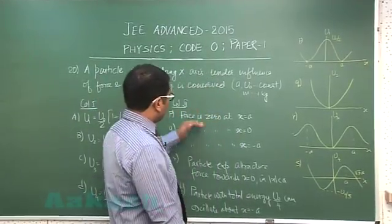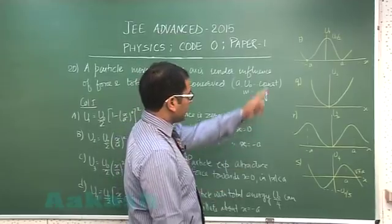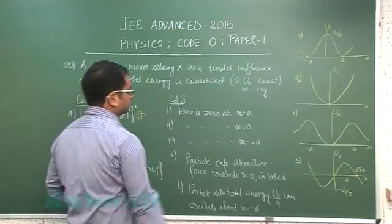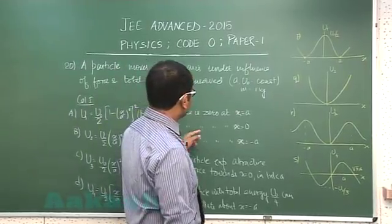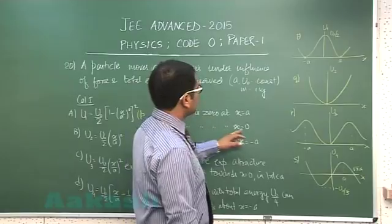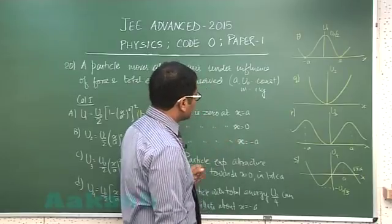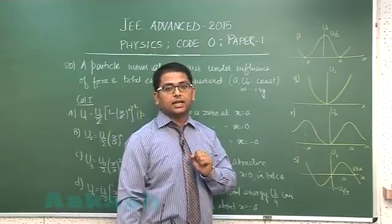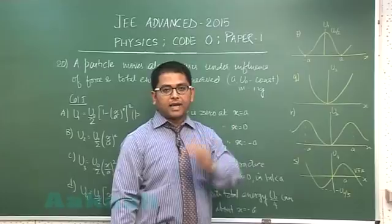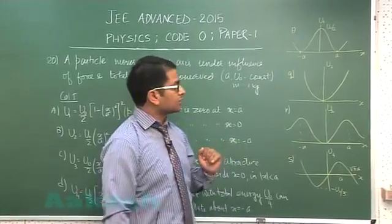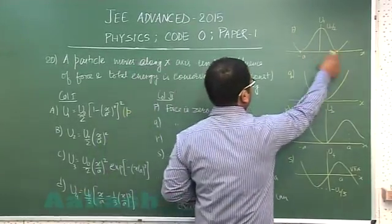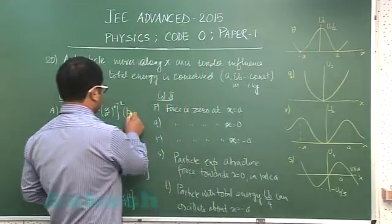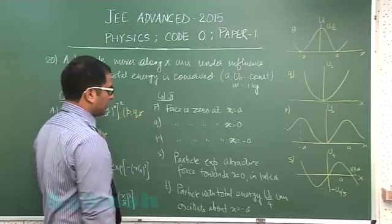Okay, now force is zero at x equals a—that is valid, so A will have an option of P. Force is zero at x equals zero. You've got to see when is the force zero: when the potential energy is either locally minimum or maximum, or if potential energy is constant. So at zero, a, and minus a, potential energy satisfies those properties, so Q and R would be valid for A.